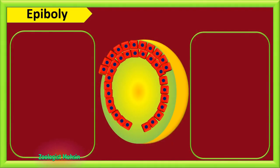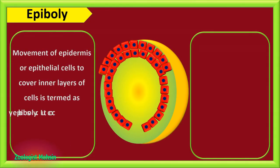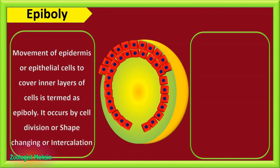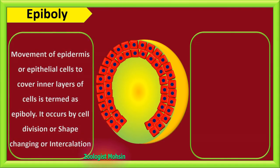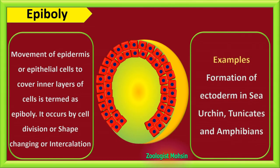Epiboly, the most asked in exams. Movement of epidermis or epithelial cells to cover inner layers of cells is termed as epiboly. It occurs by cell division or shape changing or intercalation of cells, or mixed effects of all these three. Examples of epiboly involve formation of ectoderm in sea urchin, tunicates, and amphibians.